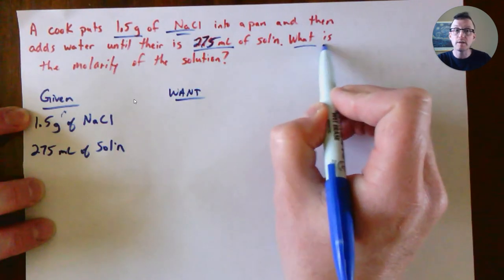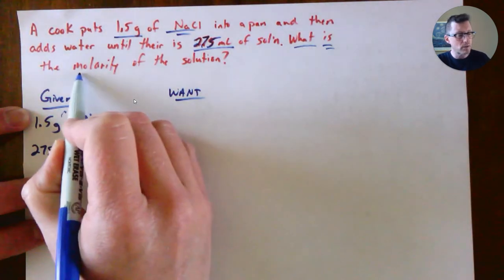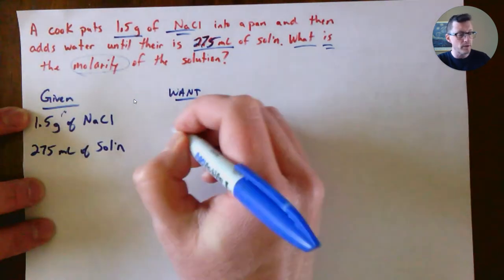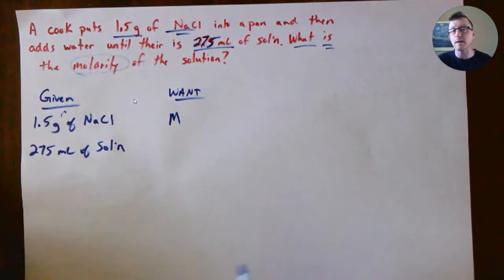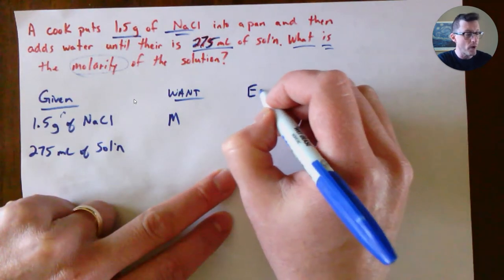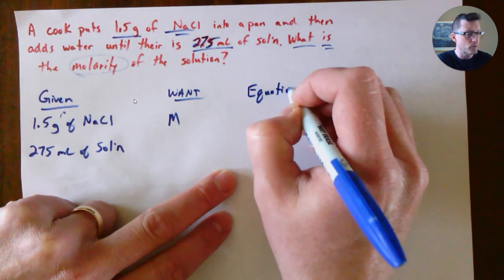Here's my question words: what is. We're looking for molarity. Molarity is capital M. What equation would we need to use for this one?